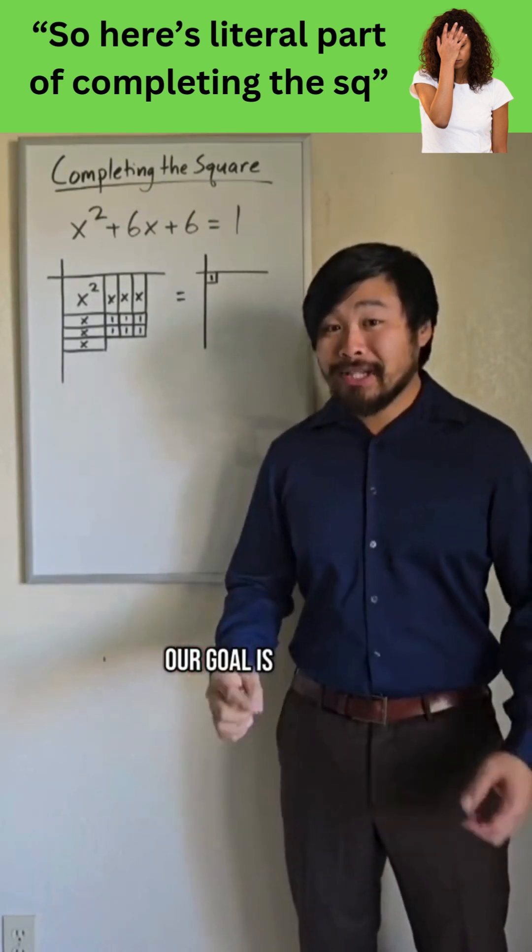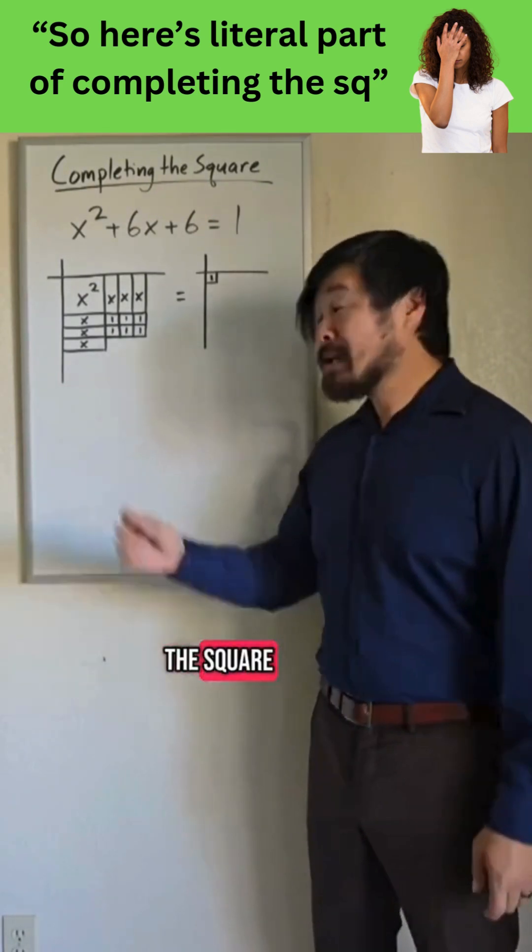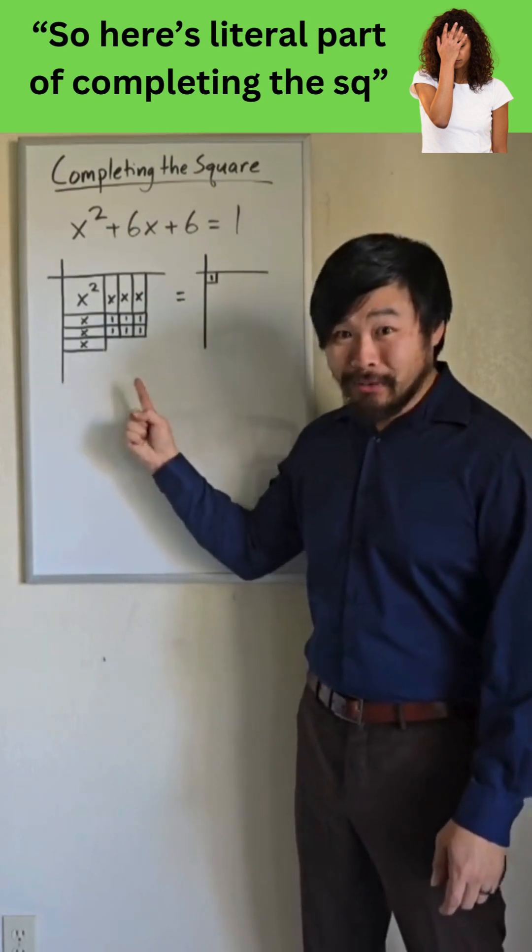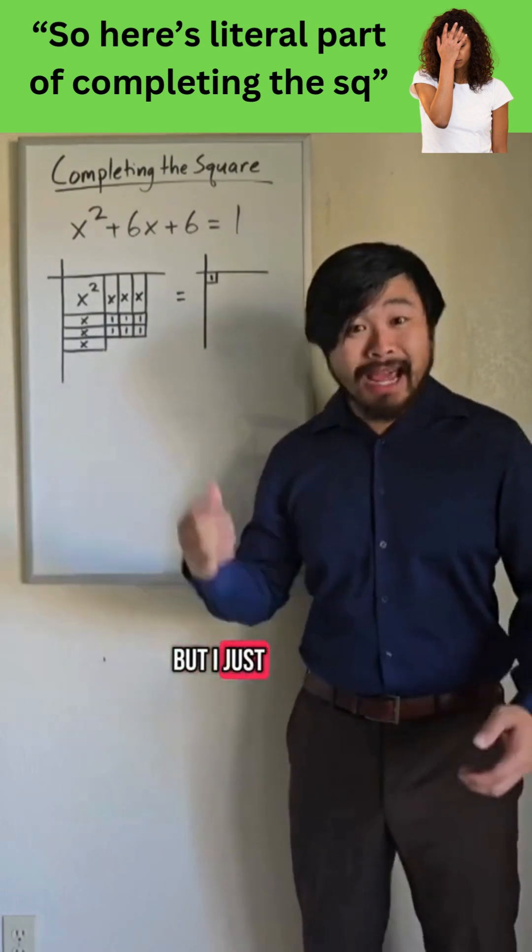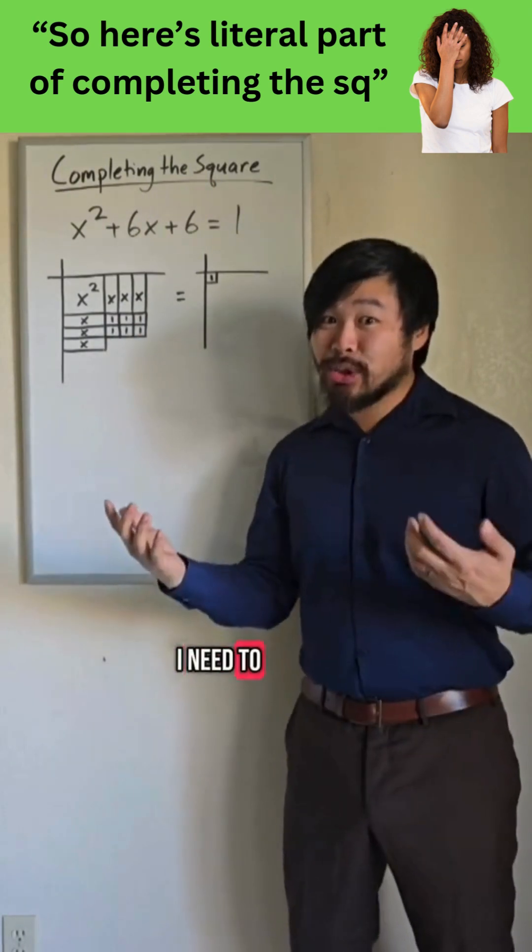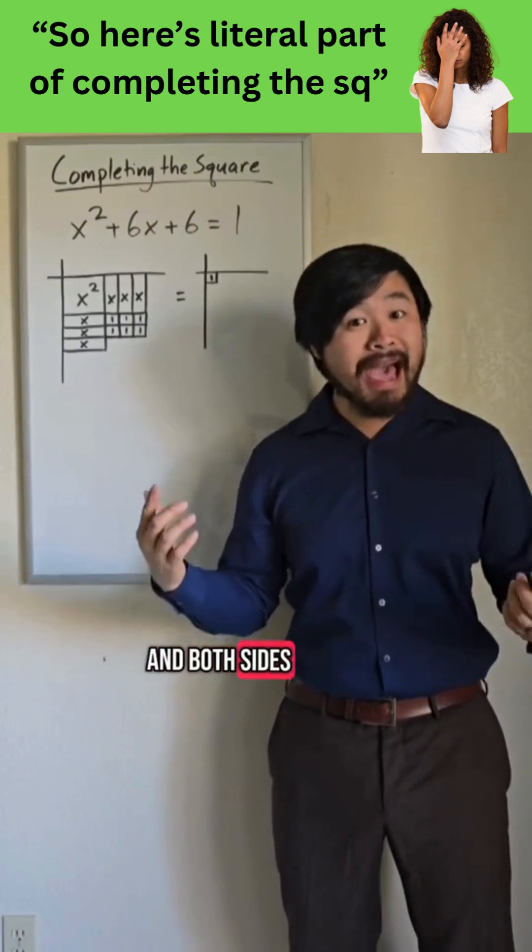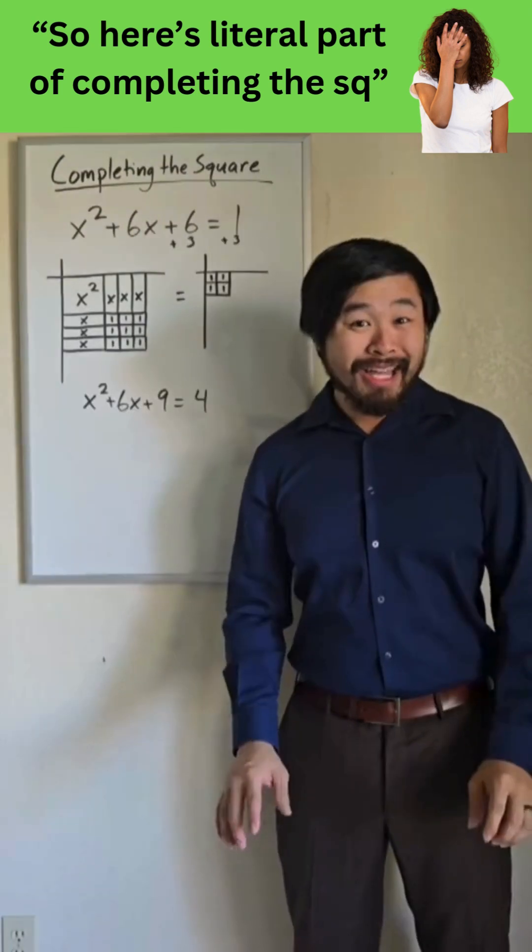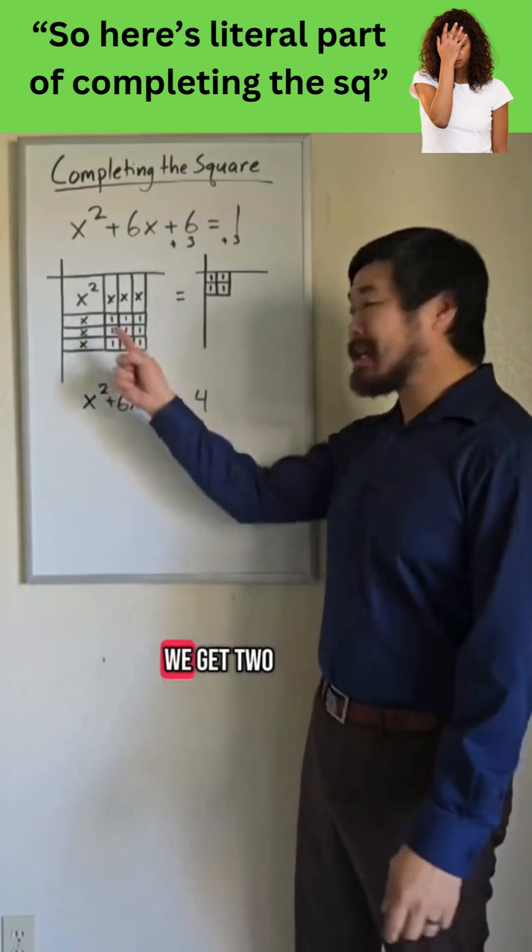Now remember, our goal is to literally complete the square. So what do I need to add over here to complete the square? Well, 3 ones, but I just can't add 3 ones on the left. I need to add 3 ones on the right, and both sides have to be squares. And when we add 3 on both sides, we get 2 squares.